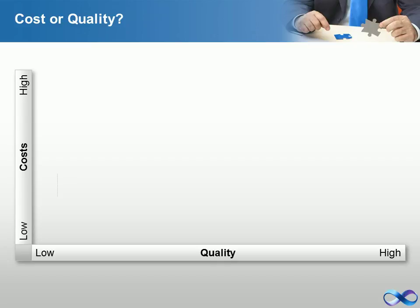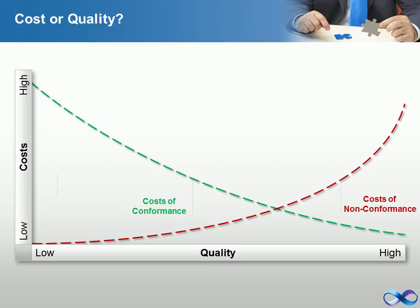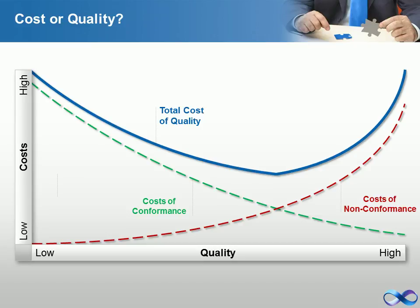Quality costs fall in two broad categories: costs of conformance — in other words, the costs of control or implementing quality — and costs of non-conformance — in other words, the costs of failure of control or rectifying defects. By adding the two cost categories, we yield the total cost of quality.